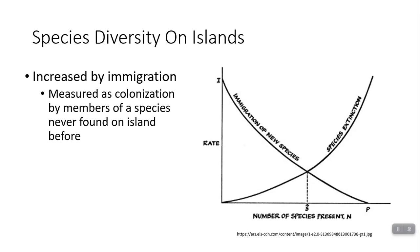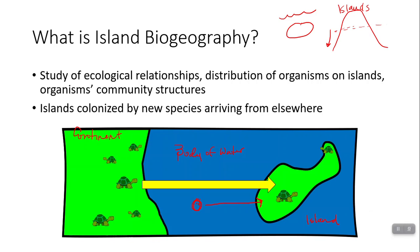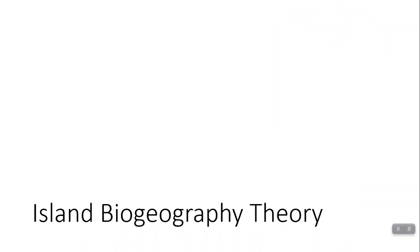Immigration is measured as colonization by a new species that has not been on that island before. So let's say we had some turtles move in, and then we had more turtles of the same species move in — only that first event would be immigration. That's when you're colonizing the island with a new species that hasn't been there before. Other turtles coming in are just replenishing the existing population.